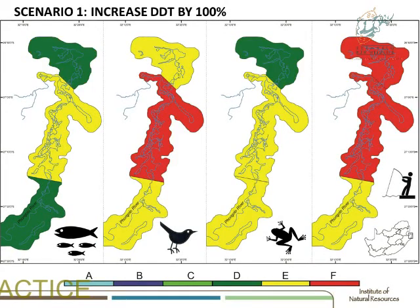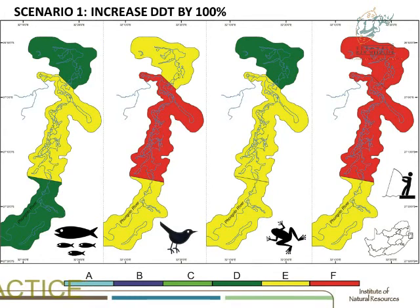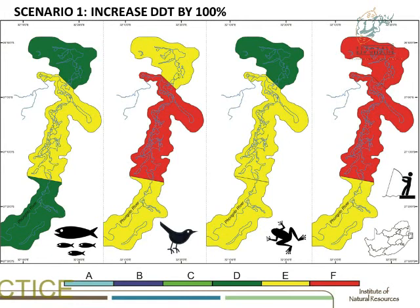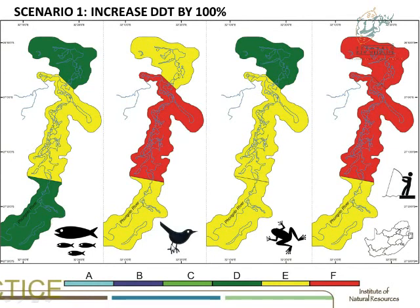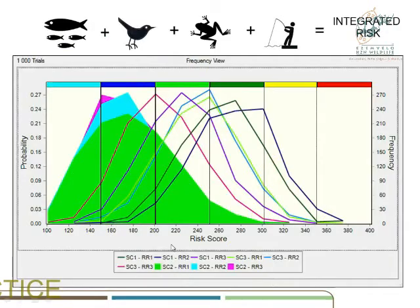What happens if you increase DDT by 100%? Currently there are DDT issues — it is having an impact on the birds and amphibians, but it's not huge. But if you double the DDT loads, there are a lot of thresholds we're approaching. You can see that the people are the most at risk overall, and then the fish, the frogs, and the birds get hammered — it has something to do with their eggshells.